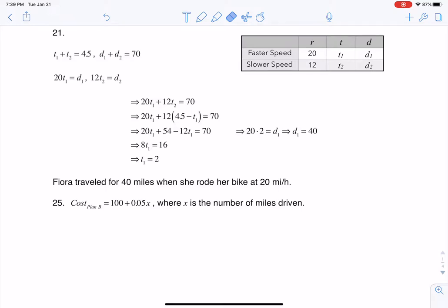Hey Math 31, I had a question coming out of section 2.3, number 21. This is where we're told that Fiora starts riding her bike at 20 miles an hour, then she slows down to 12 miles an hour and keeps that speed. The whole trip of 70 miles takes 4.5 hours, and we're asked for what distance did she travel at 20 miles an hour.